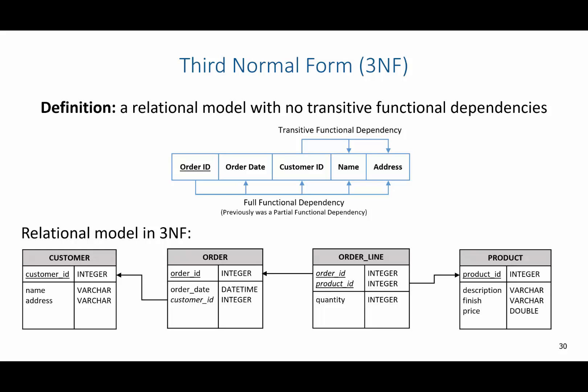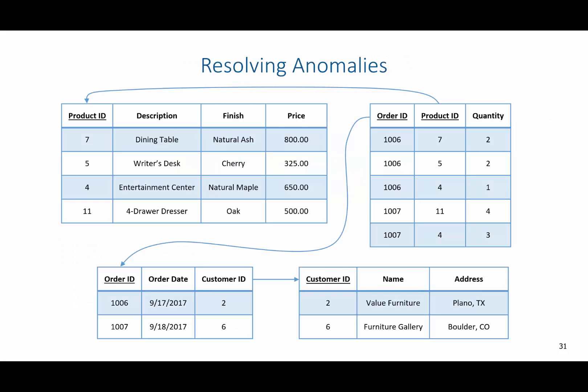Now we have a relational model in third normal form. Let's test to see if we have any anomalies. If I were to insert a new customer, would I have to insert a new order or new product? No — this resolves the insertion anomaly. If I were to delete a product, would I lose any order or customer information? Not directly — I would lose the order line reference to product ID and quantity, but it would not impact order or customer tables. If I were to update the entertainment center to have a different finish, would I have to update multiple rows? No. We have successfully resolved all three anomalies.